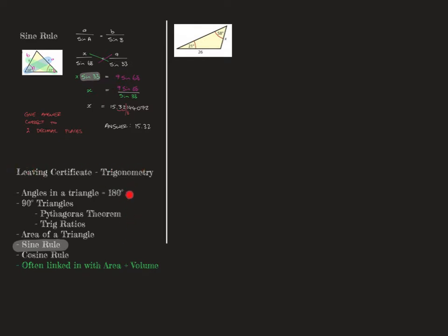The framework we use for trigonometry starts by looking at angles in a triangle having 180 degrees. In this case I can find out what that angle is, but that won't help me find this side, so it's of no importance. The next thing is 90-degree triangles — we don't have one, so we can't do Pythagoras' theorem and we can't use trig ratios. We can only use those if we have a 90-degree triangle. The next thing is the area of a triangle — we don't know the area, so that won't help us find this side either.